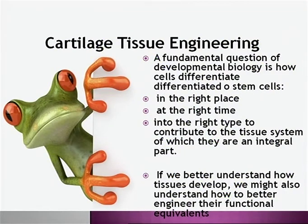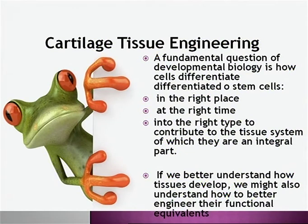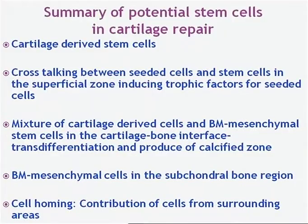The fundamental question of developmental biology is how stem cells differentiate into the right place, at the right time, into the right type, to contribute to the tissue system. If we better understand how tissues develop, we might also better understand how to engineer functional equivalents. In summary: what we could use for cartilage repair is committed cells — cartilage-derived stem cells — and we should expect cross-talking between seeded cells and stem cells in the superficial zone, inducing trophic factors and better integration.